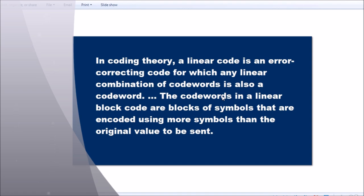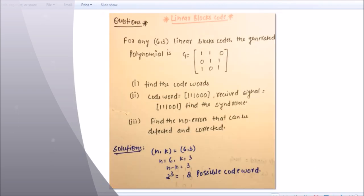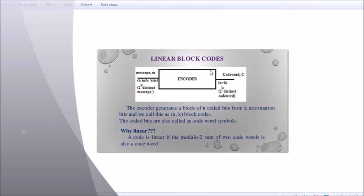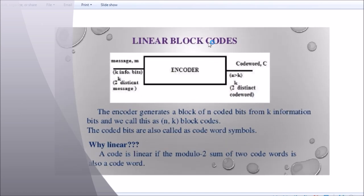So just see, this is our linear block code. Linear block code has your message 2 raised to the power k distinct messages, or your codeword c, 2 raised to the power k distinct codewords. The encoder generates a block of n coded bits from k information bits, and we call this as n,k block code.